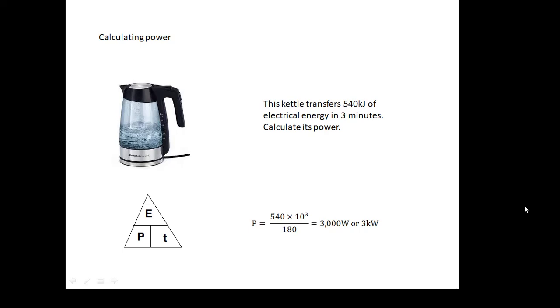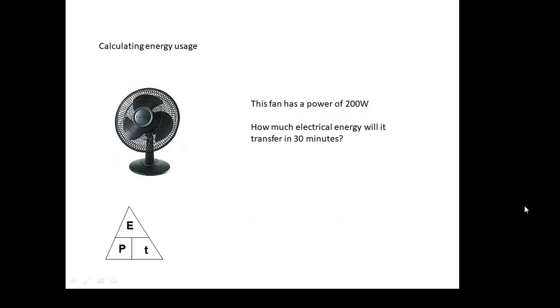I will do another video practicing these sums. Here's another one. This fan has a power of 200 watts. How much electrical energy will it transfer in 30 minutes? So energy transferred is power times time: 200 × 30 × 60, and you get 360 kilojoules of energy transferred.